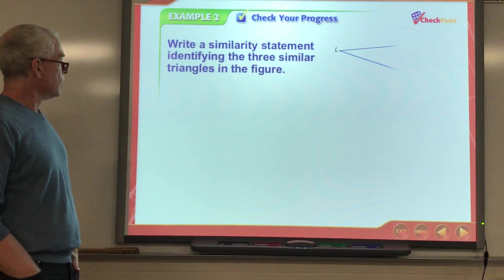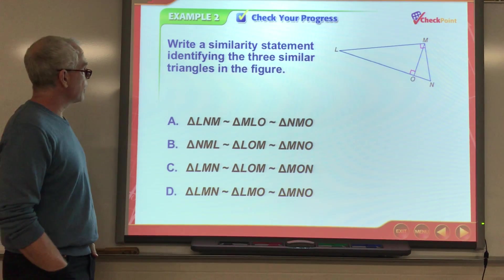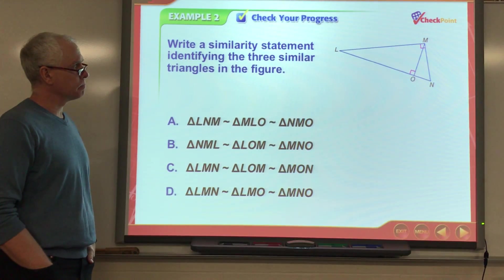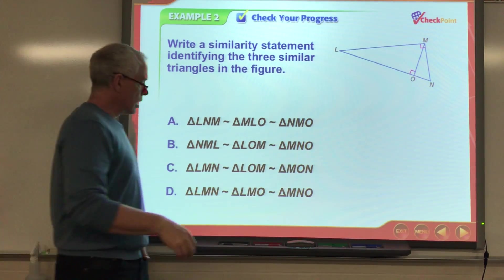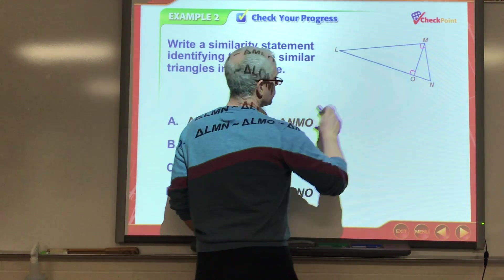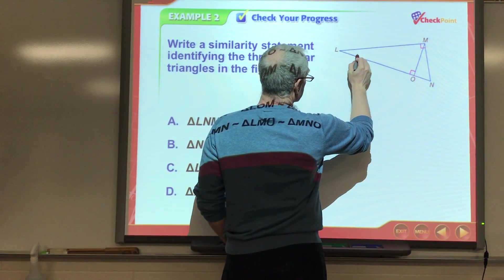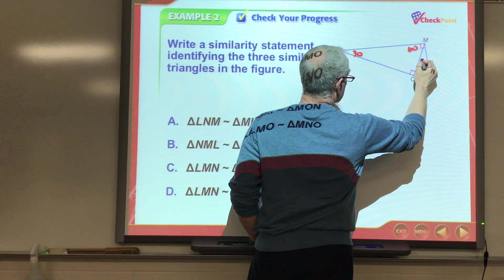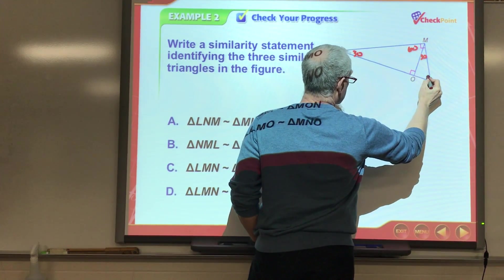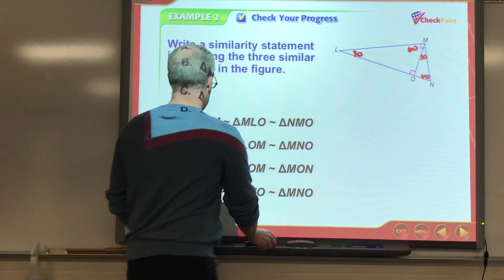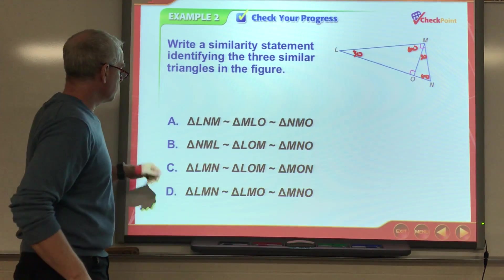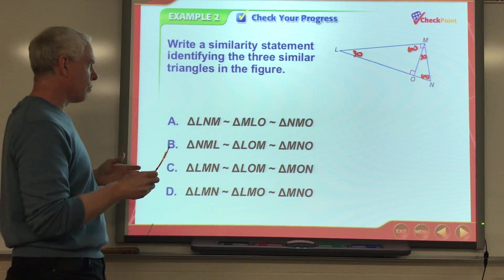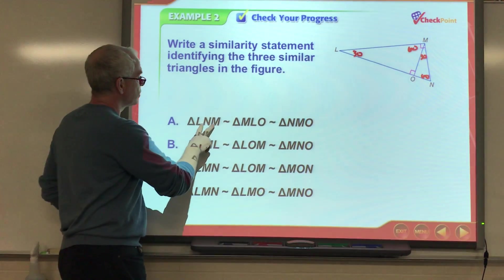Okay, so, write a similarity statement identifying the three similar triangles in the figure. Okay, so, pause the video, give this a shot. I'm going to go through and do something similar here. So, I'm going to say this is 30, which makes this 60, which makes this 30, which makes this 60. Okay, now, when I'm looking at my answers here, okay, they're all kind of written a little bit different.